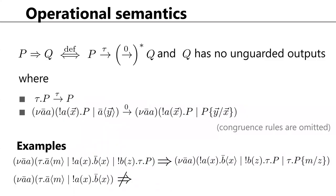Now let's talk about the operational semantics. We formalize our idea as a reduction semantics. We write p reduces to q if and only if there is a tau reduction followed by communication that ends up with q, where q has no unguarded outputs. Here the reductions with superscripts are the standard reduction relations: one for tau reduction and one for communication.